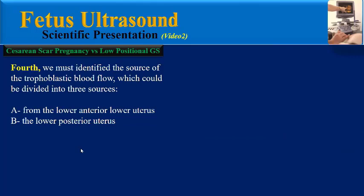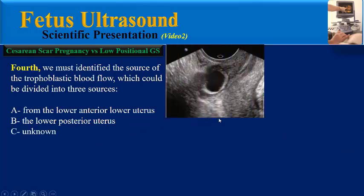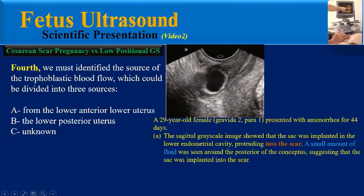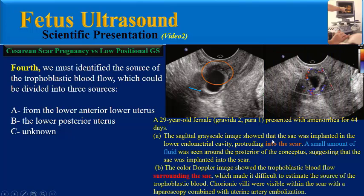Another source of trophoblastic blood flow may be unknown. As an example, a 29-year-old pregnant female: the sagittal image shows that the sac was implanted into the lower endometrial cavity, protruding into the scar. A small amount of fluid was seen around the posterior uterus, suggesting that the sac was implanted into the scar. The color Doppler image shows the trophoblastic blood flow surrounding the sac, which made it difficult to estimate the source. Chorionic villi were re-evaluated within the scar using laparoscopy combined with uterine artery embolization.